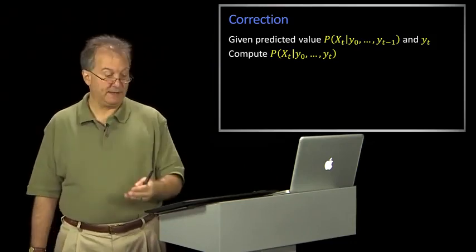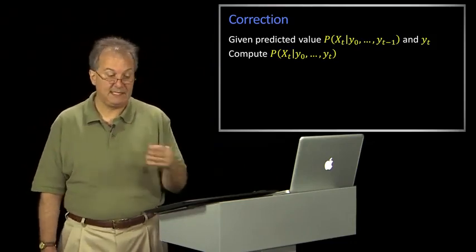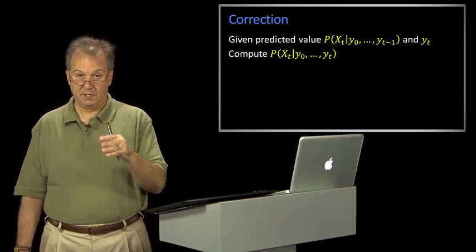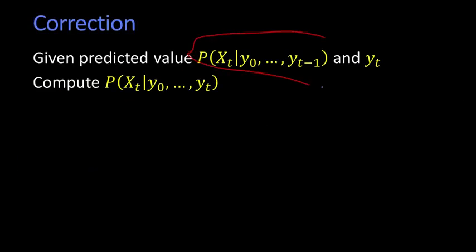So now we know how to do a predicted value. So the p of xt given all our measurements. So given this, and then we take a measurement at time t, what do we want? We want the new corrected value, x of t given y's through yt. So we're folding in the new measurement.